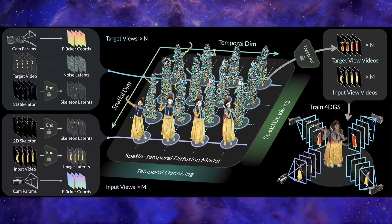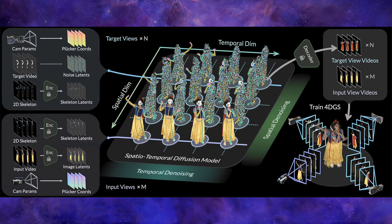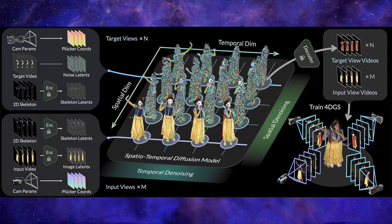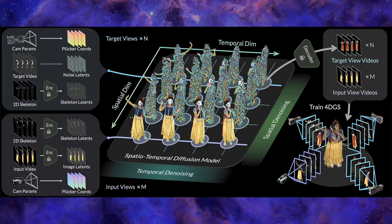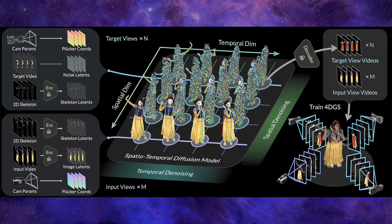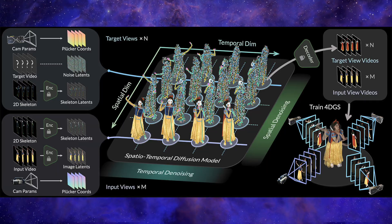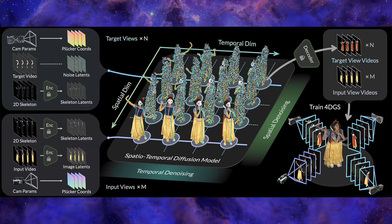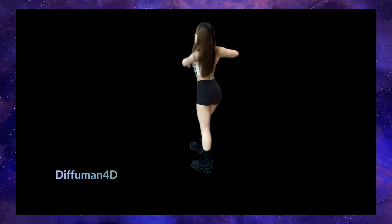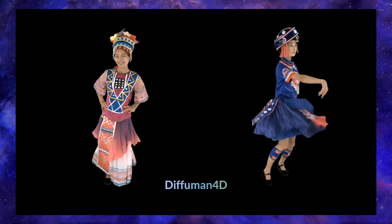Once the AI has generated all of these new high-quality video views, it moves to stage 2: reconstruction. All of those videos are fed into a system to build a final interactive 4D representation using a technology called 4D Gaussian splatting. This technique represents the entire scene not with traditional polygons, but with millions of tiny, colored, semi-transparent particles called Gaussians. The result is a model that can be rendered in real-time with incredible detail, which is what allows us to interact with these demos so smoothly.